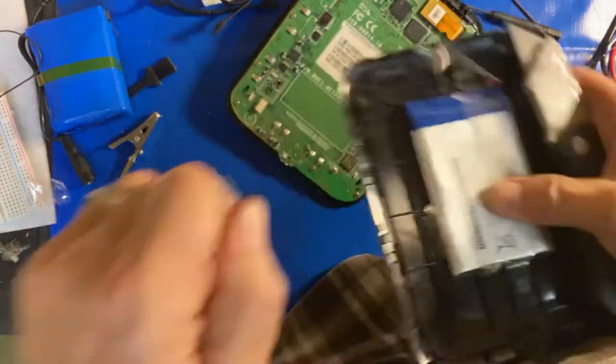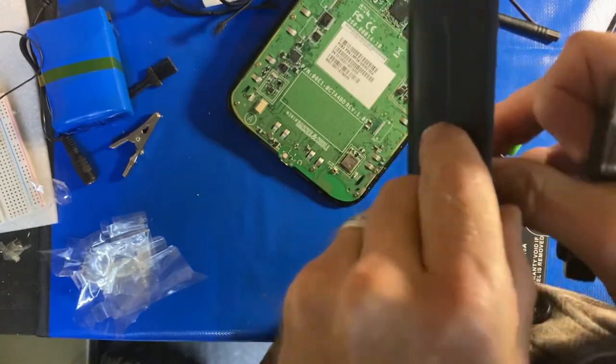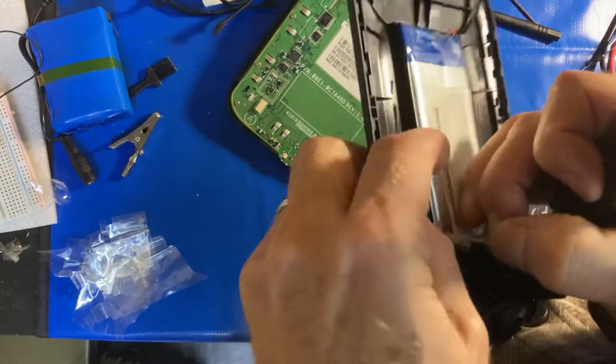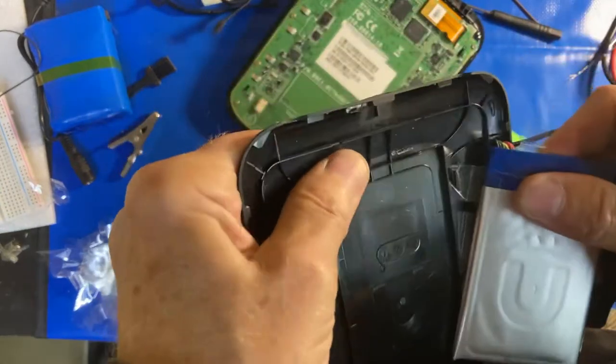Once you get it to come out a little and grab it underneath, you can use it to pull off the rest. Okay, so there's the bad battery - get rid of that. Now I've got the new battery, and the important thing here